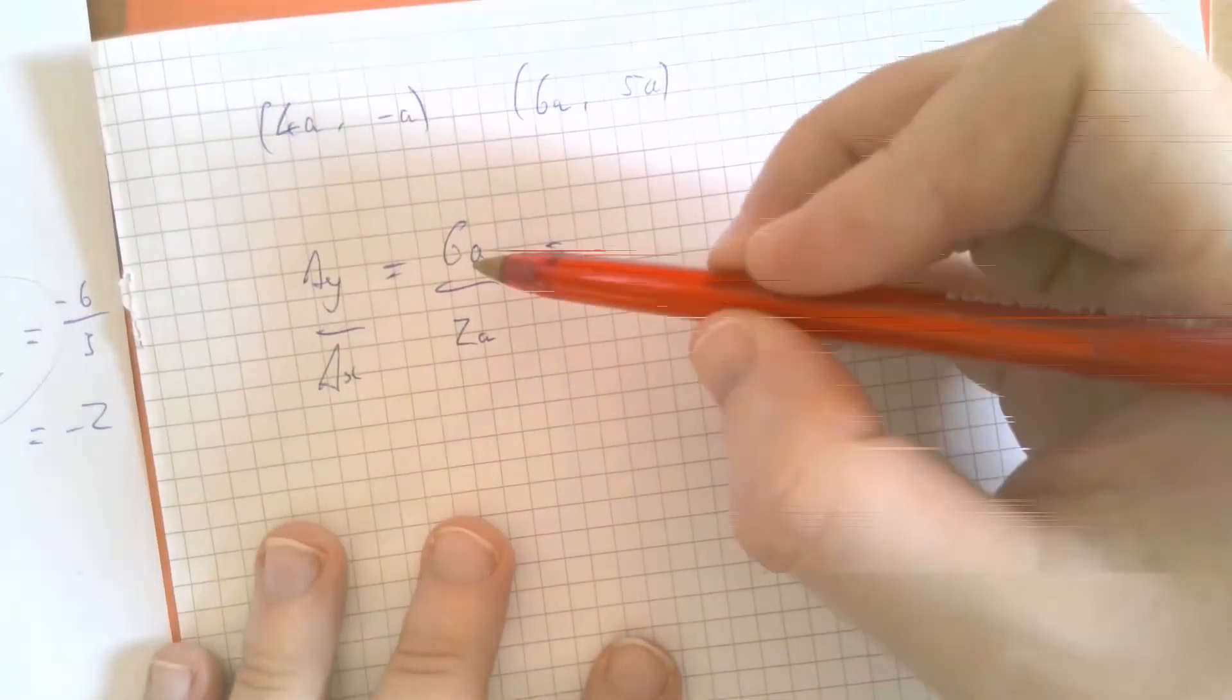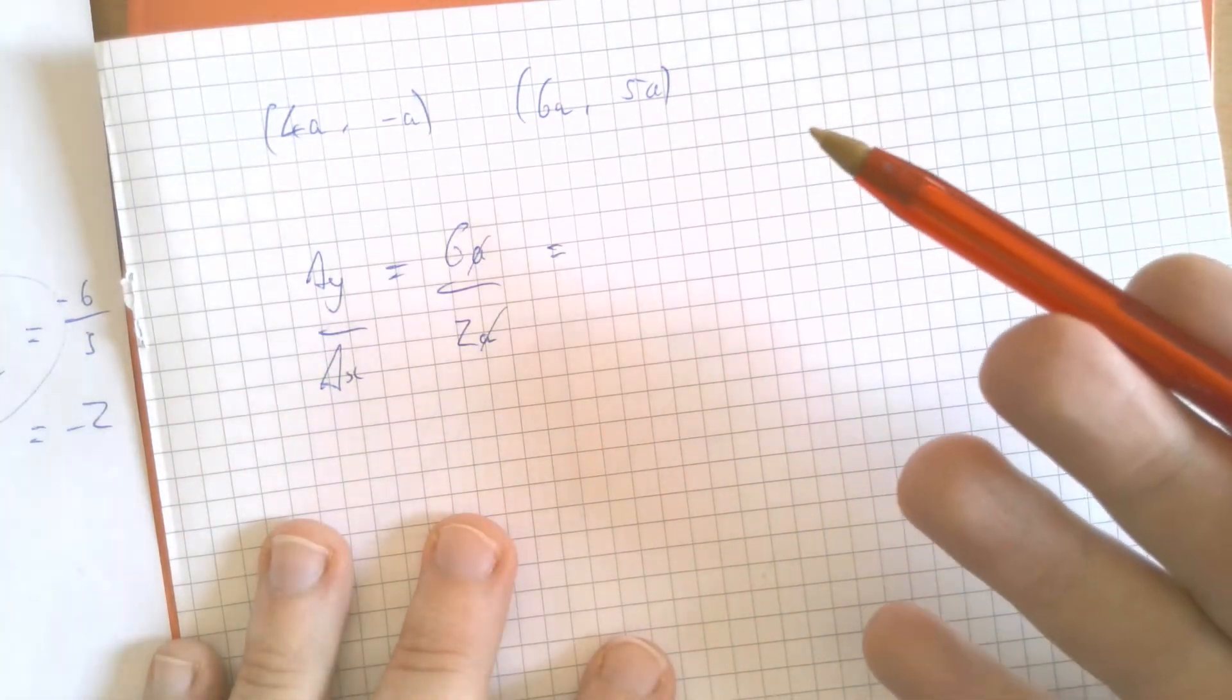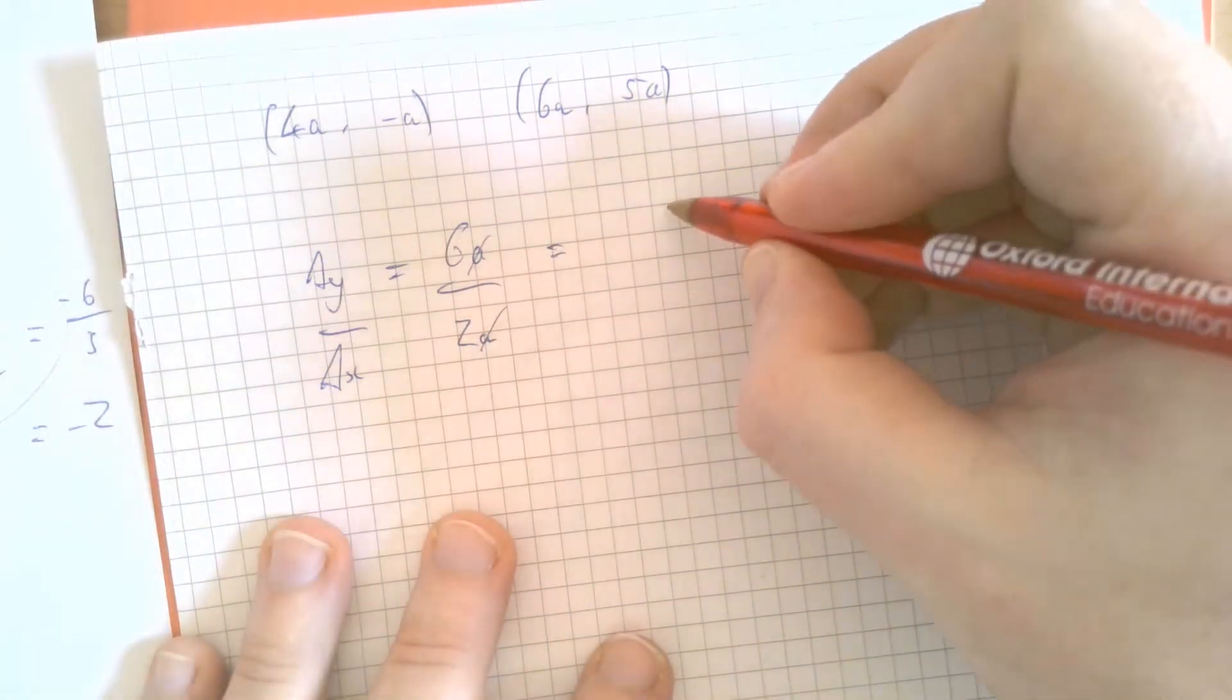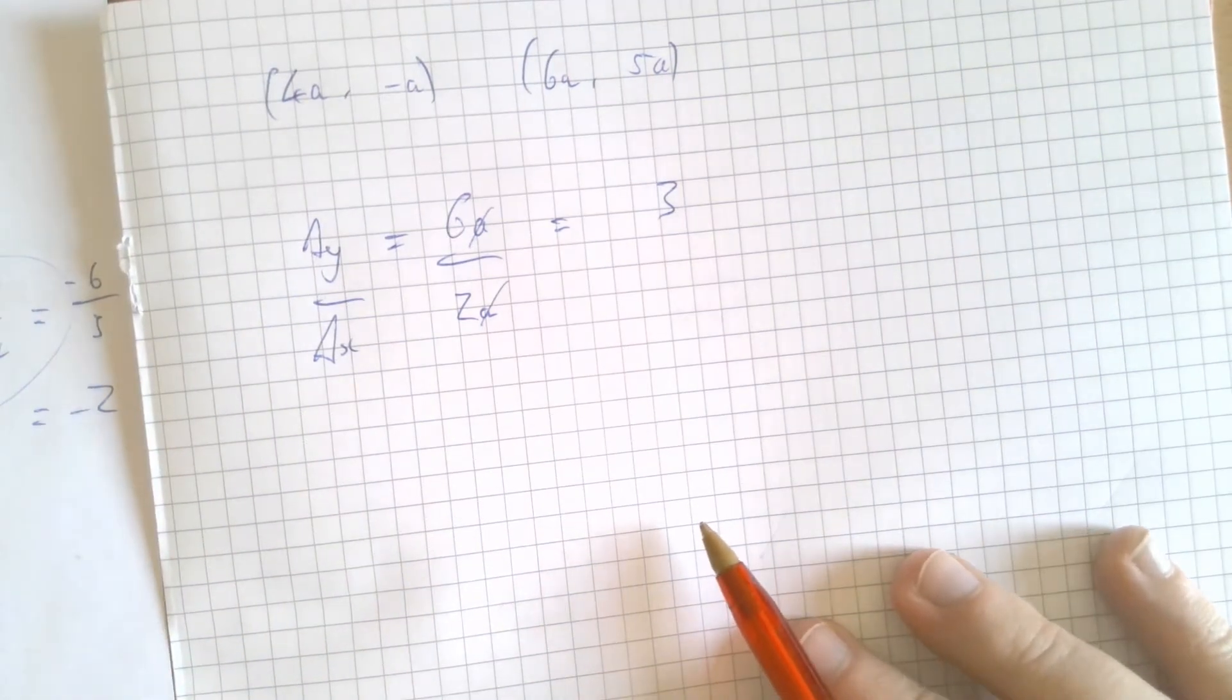But 6a divided by 2a, the a's effectively cancel. a divided by a cancels down to 1. 6 divided by 2 is 3. That's question 2.